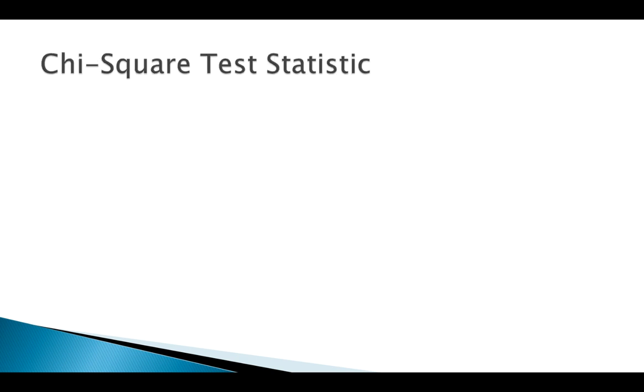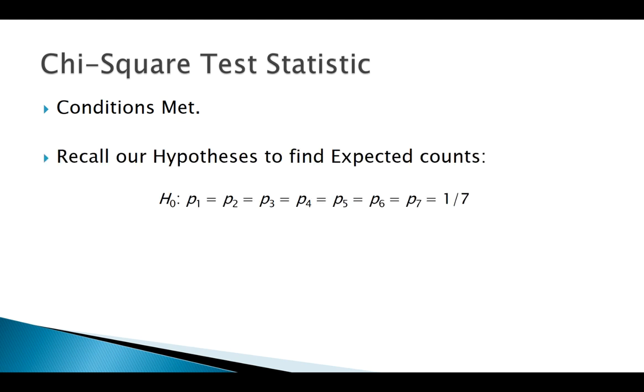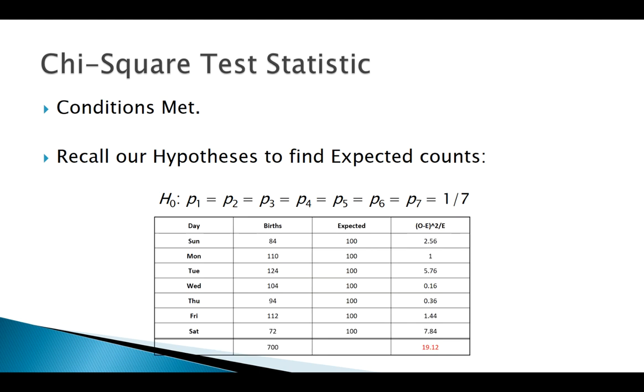Let's think about our conditions. We need expected greater than five in each. 700 times 1/7 is 100, so we're fine there. Let's calculate our expected - 700 total, they're all equal, we'd expect 100 on each day of the week, 700 divided by seven.